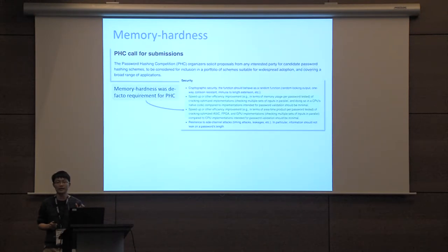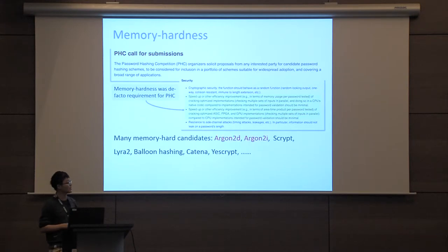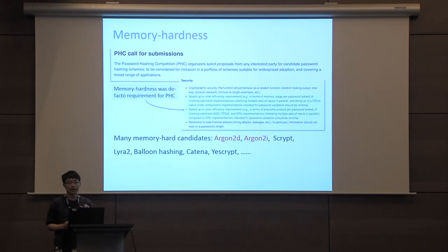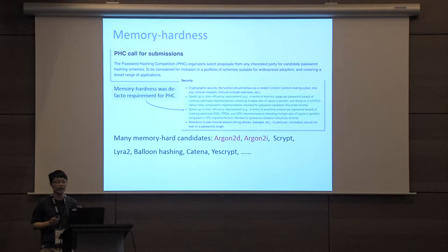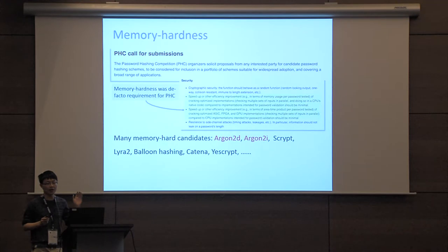More specifically, let t be the time needed to evaluate the function F. The CMC is defined as the sum of memory usage over time t. Memory hardness was a requirement in the recent password hashing competition, and many practical designs are indeed meant to be memory hard, including the winners argon2i and argon2d.